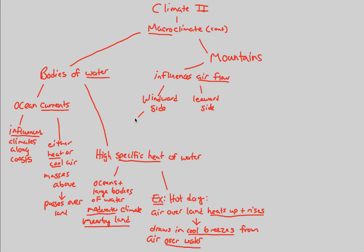On the windward side, we usually have a release of moisture, and whenever there is moisture release, rain will ensue. On the leeward side, we observe the exact opposite — typically dry deserts, because on the windward side there is significant airflow, while on the leeward side there is very little airflow. These deserts result from our understanding of air circulation patterns discussed in the previous flowchart.